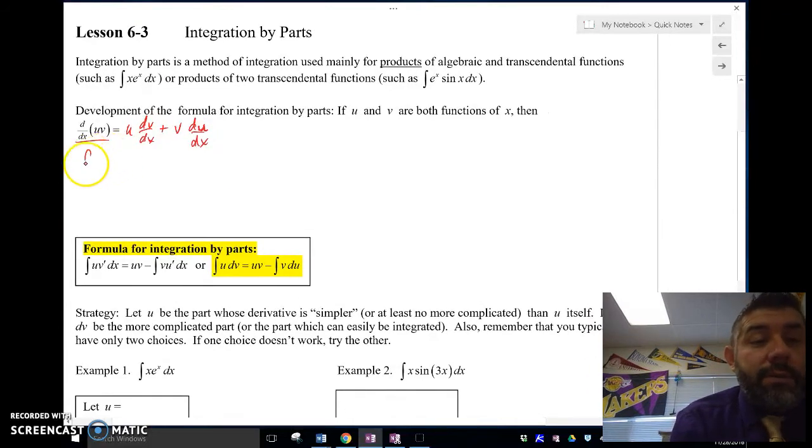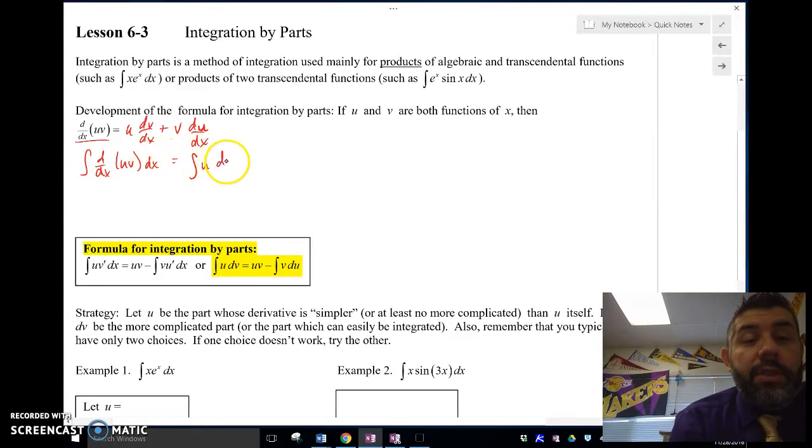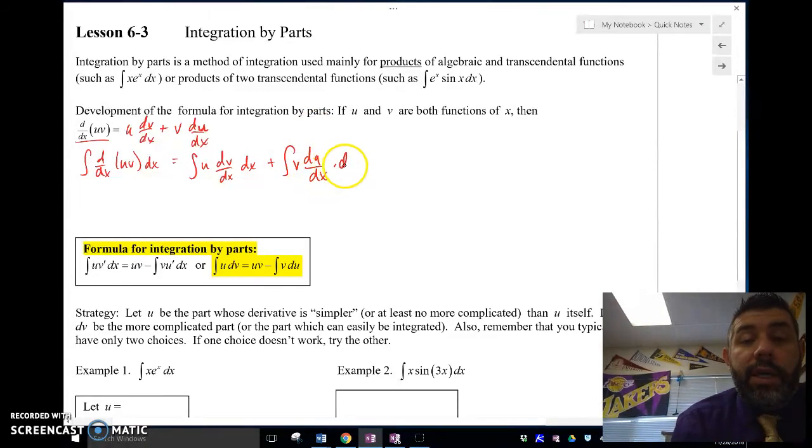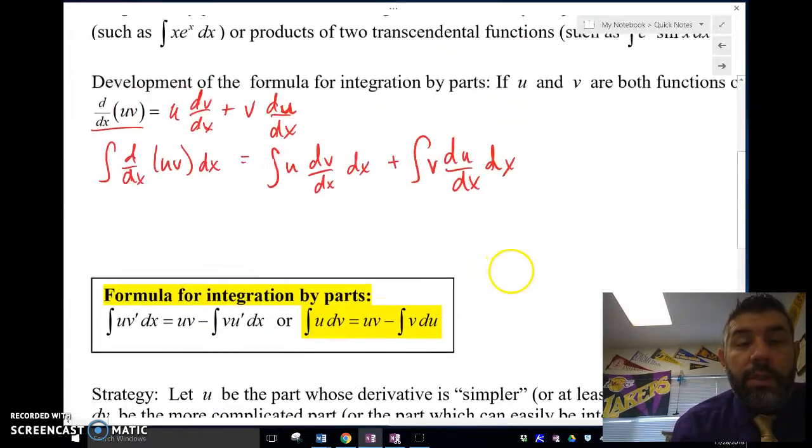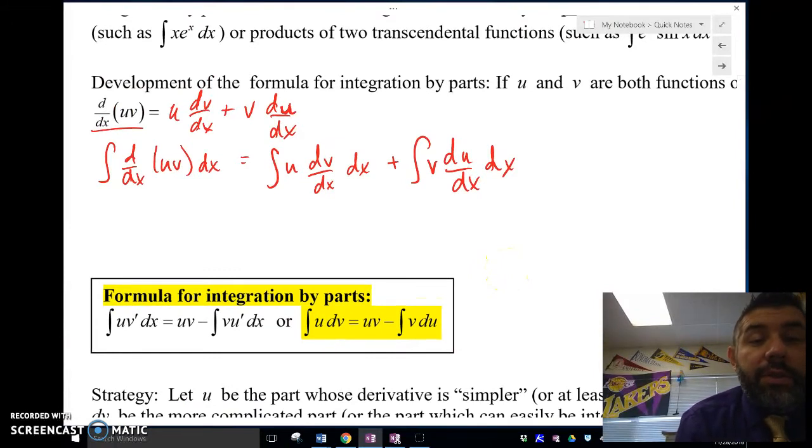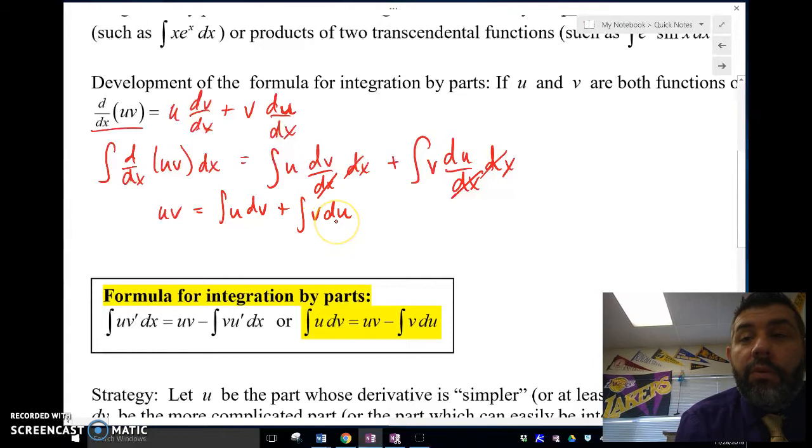Now if I integrate both sides, integrate d/dx of uv with respect to dx, integrate u dv/dx with respect to dx, and integrate v du/dx with respect to dx. This is just the integral of a derivative, so I just get uv, and then the dx's here, notice, they go away, so I get uv equals integral of u dv plus integral of v du.